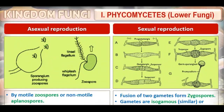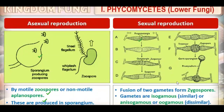Phycomycetes perform both asexual and sexual reproduction. Asexual reproduction takes place by motile zoospores and non-motile aplanospores, produced in sporangia. In sexual reproduction, two gametes — male and female — fuse to form zygospores. These gametes may be similar or dissimilar.